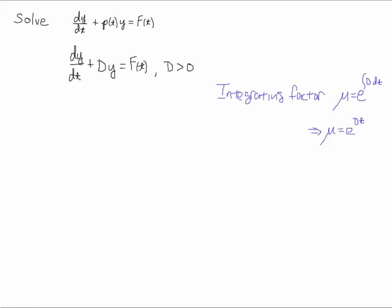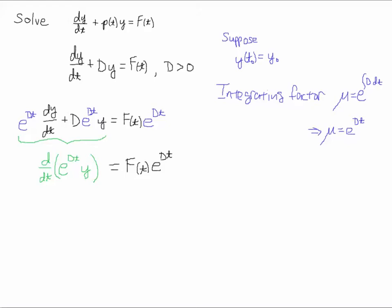I'm going to solve this by integrating factor, and of course remember that the integrating factor is the exponential raised to the integral of this coefficient. That means that if we integrate a constant we'll just get dt, so the integrating factor is e to the dt. I multiply everything by e to the dt, and you'll recognize that on the left-hand side that looks like the product rule, so I'll just collapse that down to the derivative of e to the dt times y, and on the right-hand side we just have f of t times e to the dt.